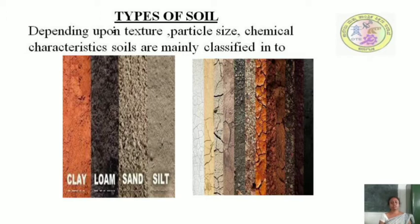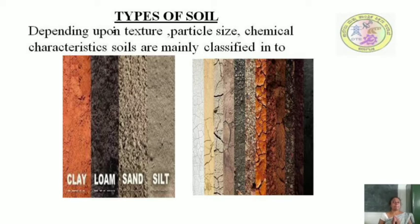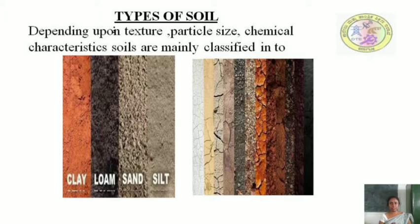Depending upon the type of texture, particle size, and chemical characteristics, soils are mainly classified into clay, loam, sand, and silt. Sand is light, warm, and dry. Clay is a heavy soil type with comparatively higher moisture content than any other soil type. Silt is light and moisture-retentive with high fertility. Loam is a rich, friable soil containing a relatively equal mixture of sand, silt, and clay in smaller proportions — making it the best option for construction.